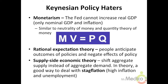Monetarists propose a monetary rule for policymakers, which states that the Fed should only increase the money supply by an amount equal to the expected growth rate of the economy. The ideas of neutrality of money and the quantity theory of money are similar in that the Fed cannot alter real GDP.